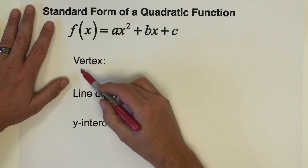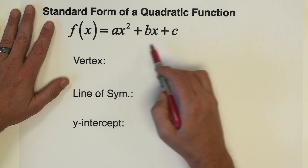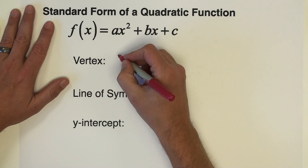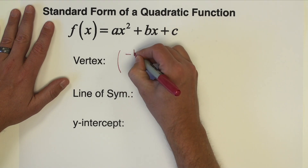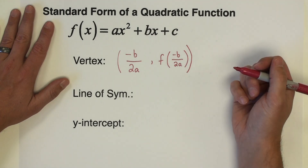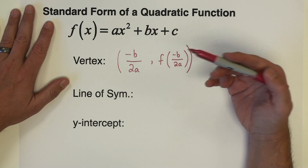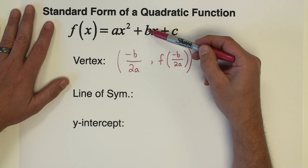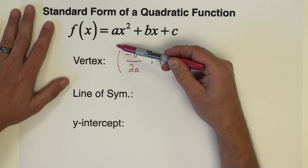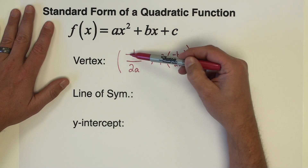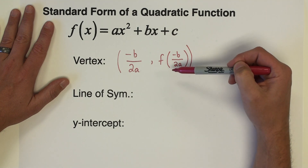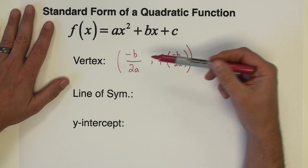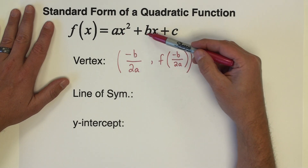There is a formula for finding the vertex when the function is written in standard form, and that's what we're going to go over primarily today. The vertex of a quadratic function written in this form is given by this formula. The x-coordinate is found using this ratio: negative b — where b is the coefficient of x — divided by 2 times a, which is the coefficient of x squared. That gives us the x-coordinate of the vertex, and then we plug that value into the function to find the y-coordinate.